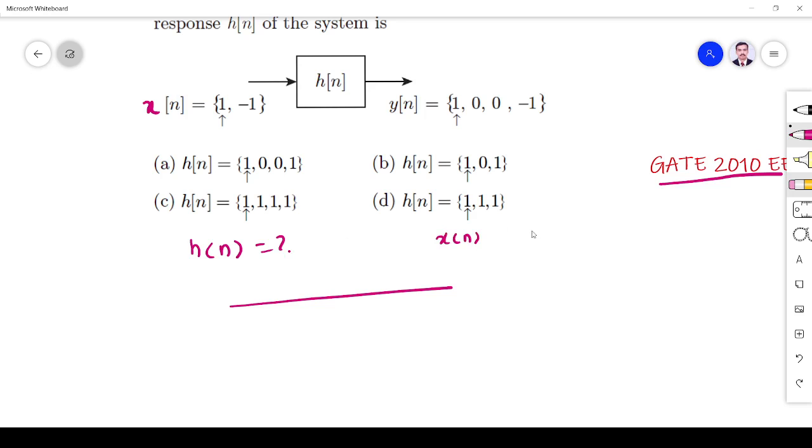x[n] has a length of two samples, y[n] has length of four samples. What should be the length of h[n]? y[n] should have length N1 plus N2 minus 1. N1 is 2, so 2 plus N2 minus 1 equals 4. Therefore N2 must be equal to 3. So h[n] must have 3 samples.